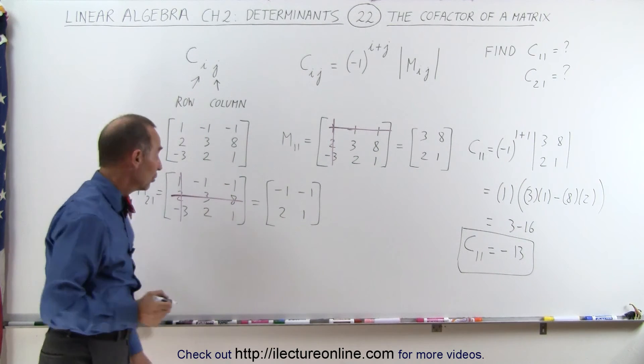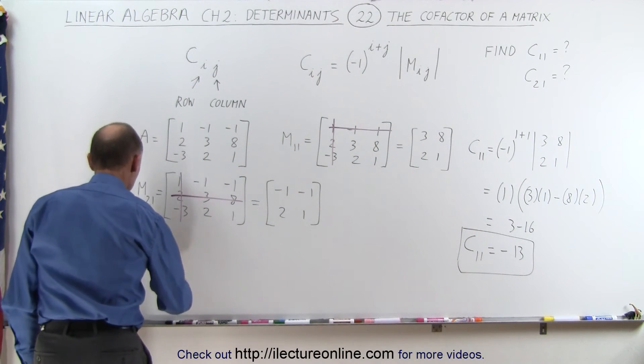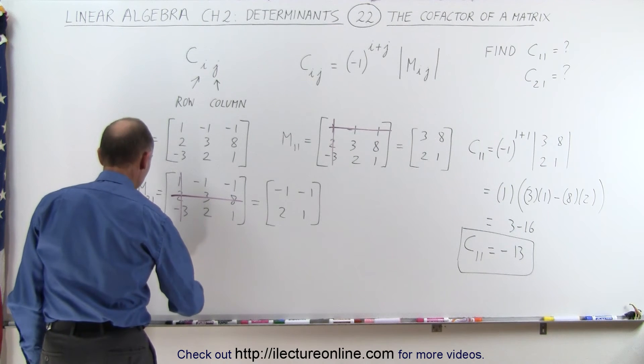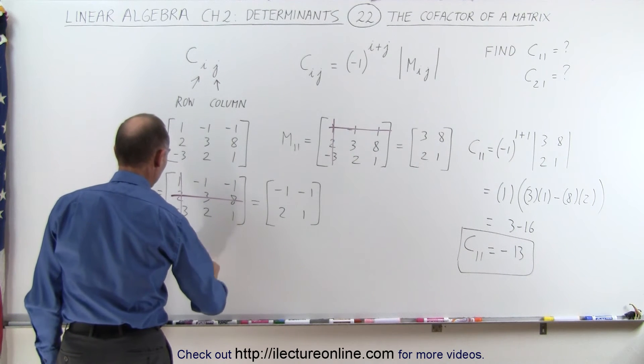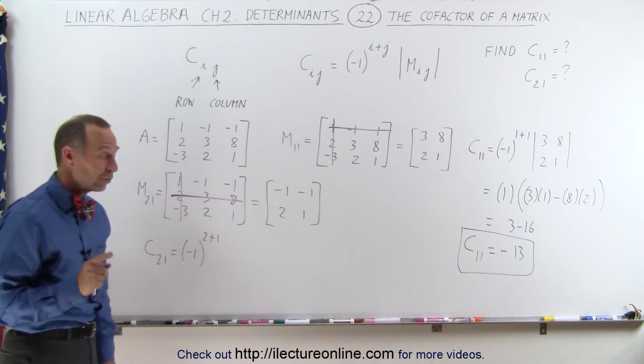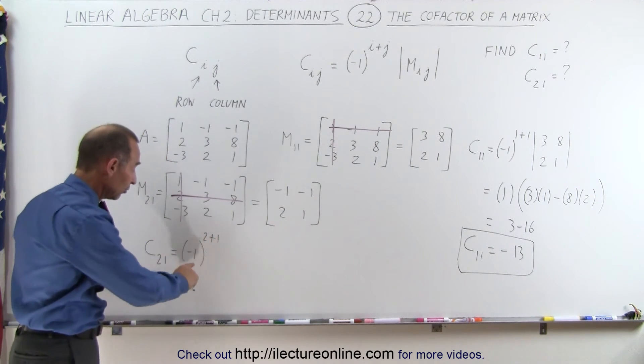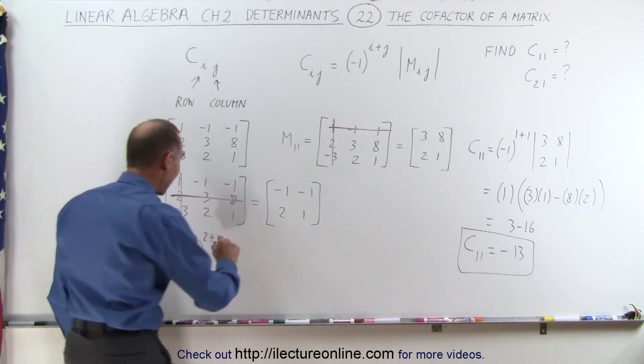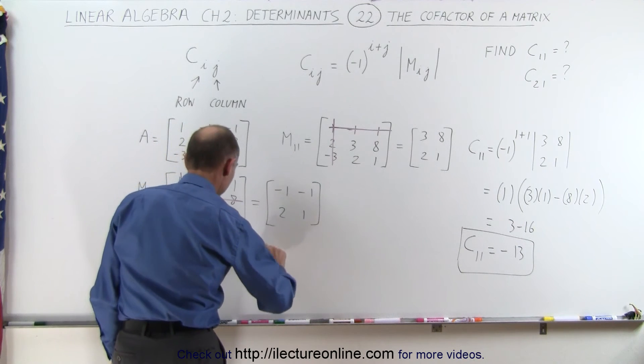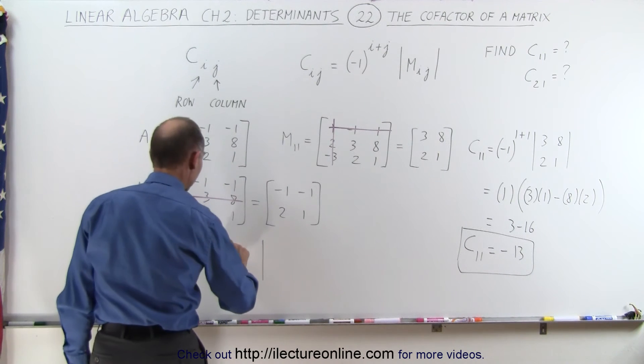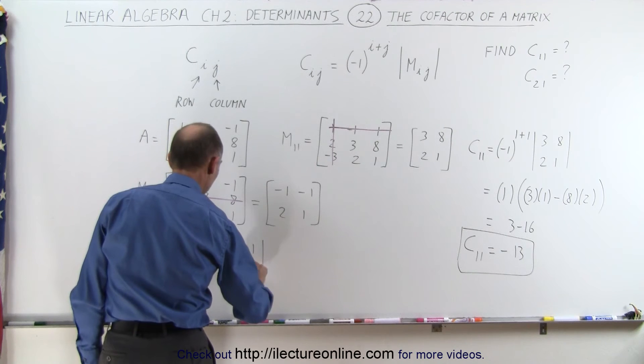And now what we have to do is the cofactor c21 is equal to minus 1 raised to the 2 plus 1 power, and notice that this is an odd power, so this will become negative, times the determinant of the minor matrix: minus 1, minus 1, 2, and 1.